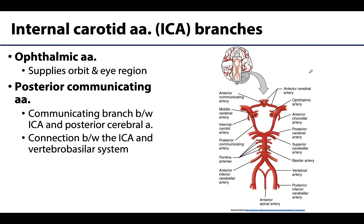Now let's discuss a few branches of the internal carotid artery. The first is the ophthalmic artery, which tends to be one of the first — if not the first — branch of the internal carotid. It will be hugely important in supplying the orbital region and the eye itself, and we will cover it in much more detail in the next session.